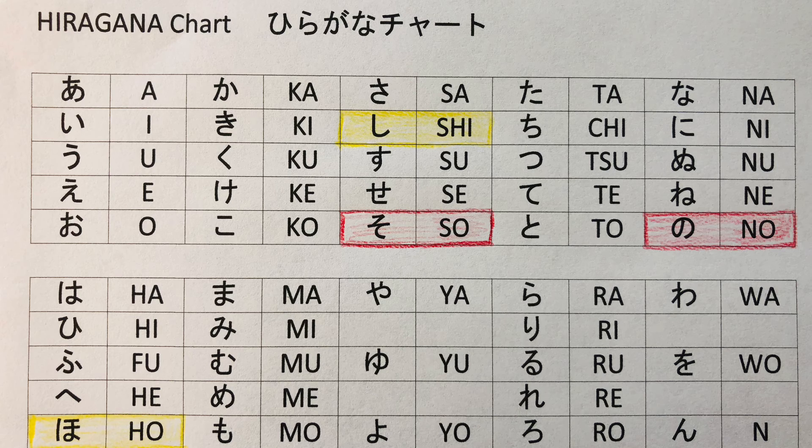And also katakana, that is used for expressing words that come from foreign countries. So, basically all these three styles, hiragana, kanji, and katakana are used all together. But the first step is hiragana. That's what you're gonna do.